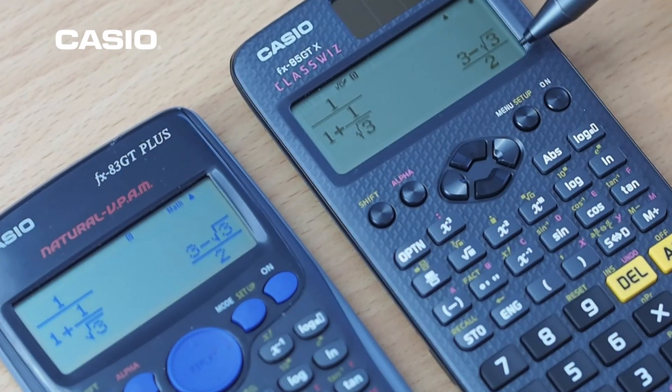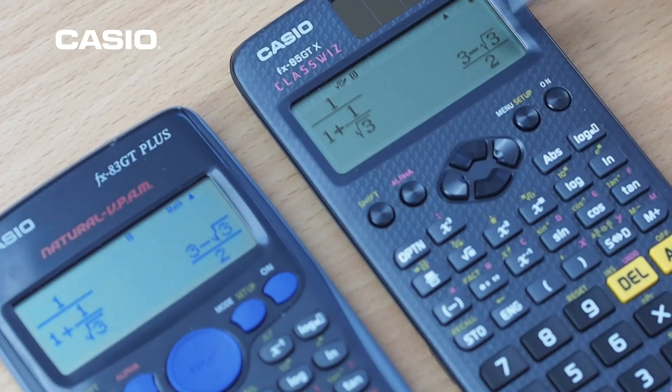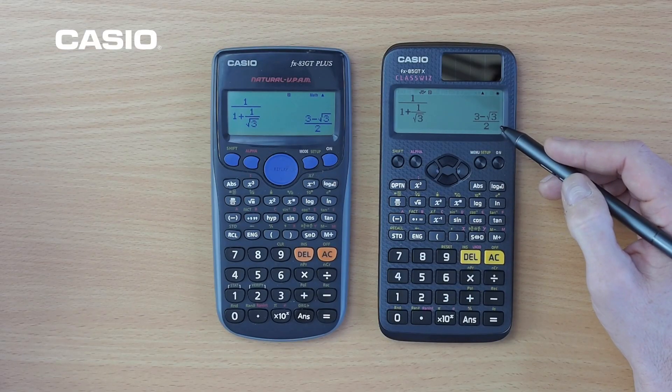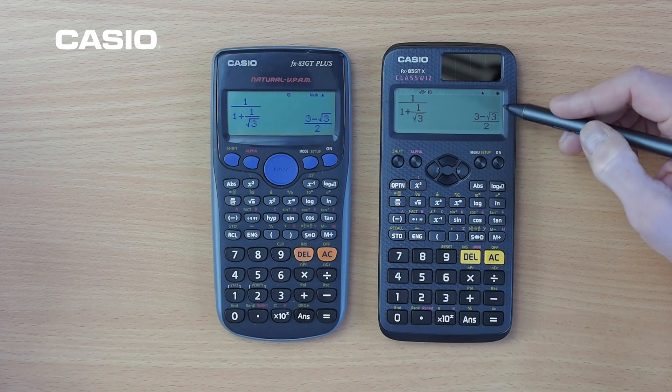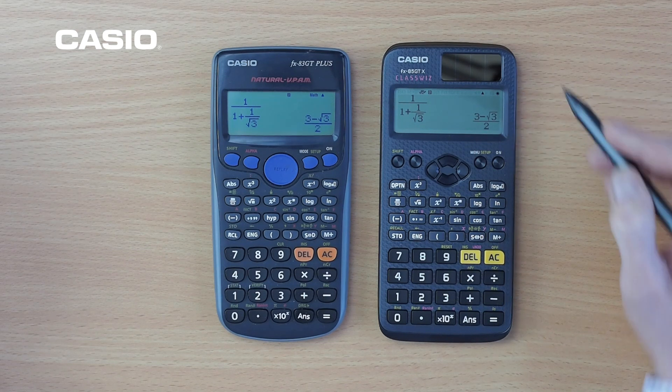Straight away, we can see that the new GTX is actually much faster for more complex calculations than the old GT plus, and you can actually see the square roots much more clearly on the display than you can on the older version.